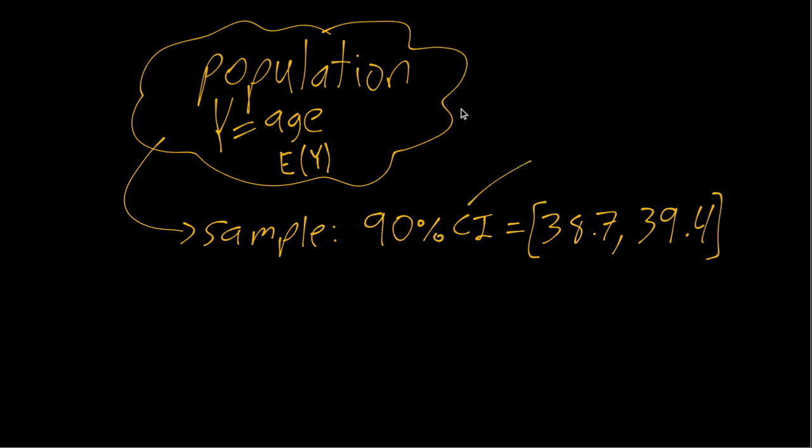So first, if we think about this from the Bayesian perspective, this is saying given my beliefs, I believe there's a 90% chance that the true population mean is somewhere between 38.7 and 39.4. I believe this true mean is in this interval with a 90% chance.